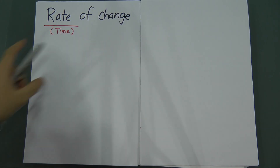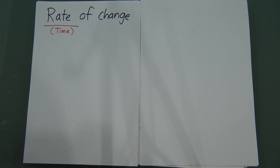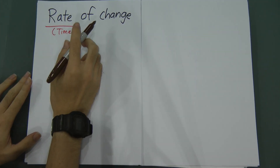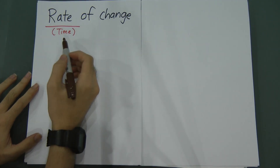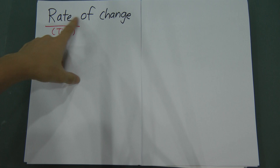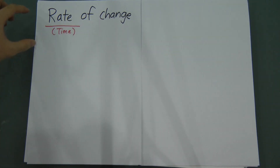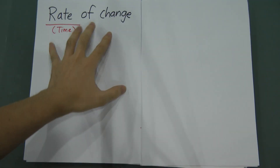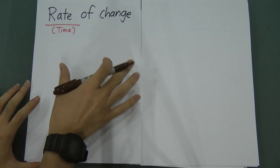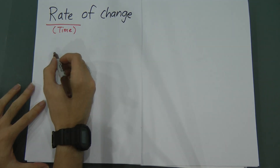Today I'm going to teach about the rate of change. This is the Form 4 chapter for AMX. When we talk about rate of change, the key word here is the word 'rate.' When you see the word rate, it means the rate is related to time. So when you see 'rate of change,' it means this term is related to time — so when related to time in the differentiation chapter, we call it DT.